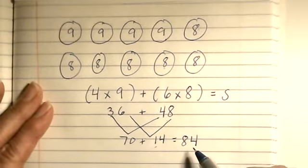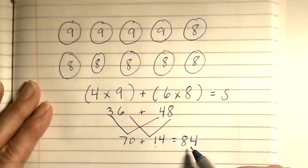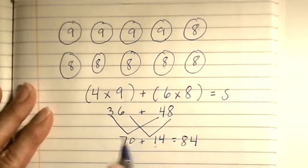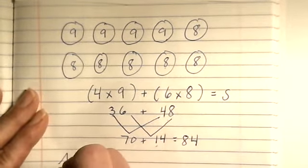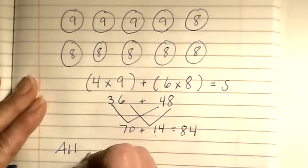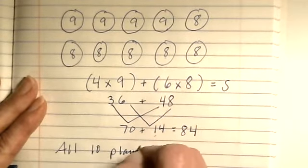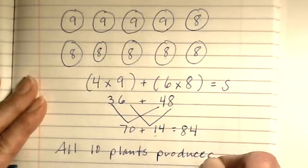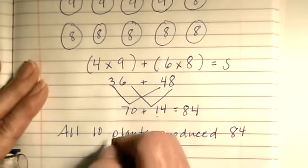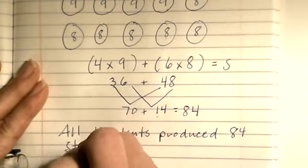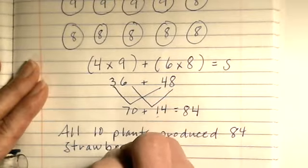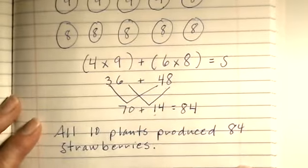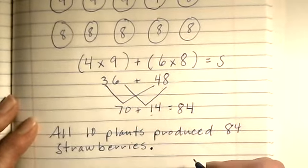So, I have eighty-four, is that my answer? Well, kind of. We have to write an answer statement, though. So, how many strawberries did all ten plants produce? All ten plants produced eighty-four strawberries. Or, if you said something like, there were eighty-four strawberries in all, but you need an answer statement.